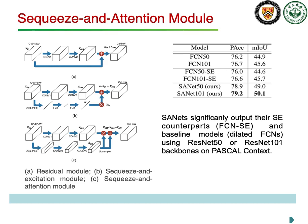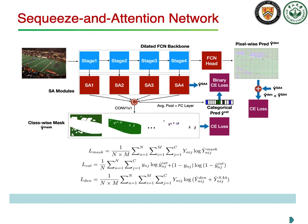This is the whole architecture of SA-NAT. Three losses are used to train this model.